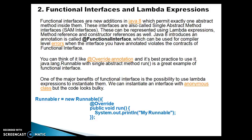One of the major benefits of functional interface is the possibility to use lambda expressions to instantiate them. We can instantiate an interface with an anonymous class, but the code looks bulky. As we know, the Runnable interface has only a single method that needs to be overridden.